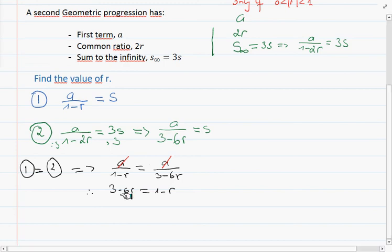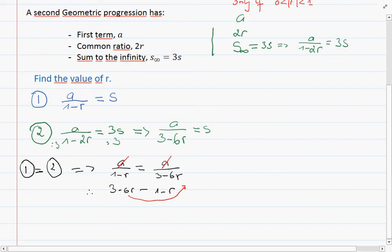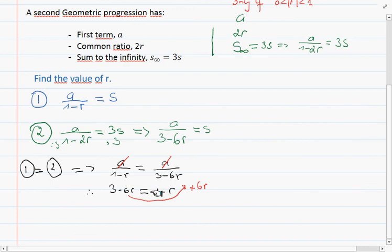So now we can pass 6r to this side. It's going to become plus 6r, and then taking minus 1 to the other side it becomes minus 1.